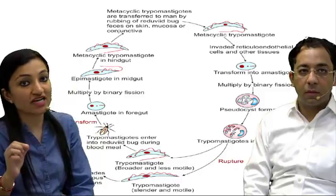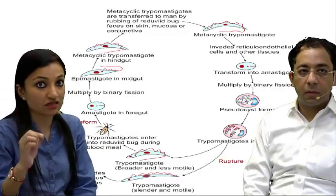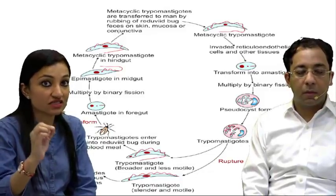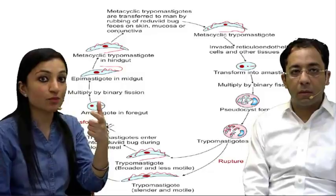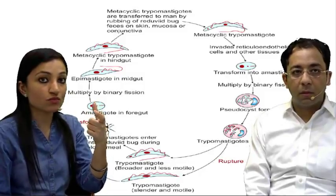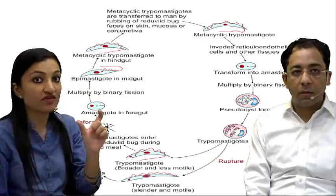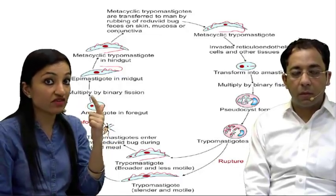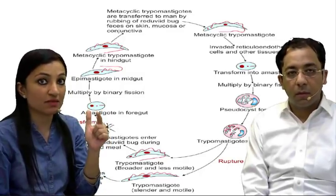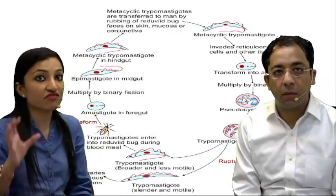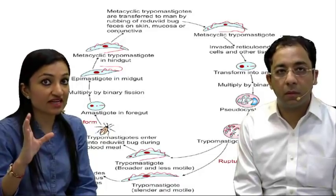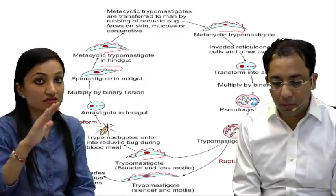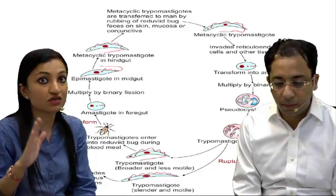When a vector bites a human carrying trypomastigotes in the bloodstream, it picks up those forms. In the vector's foregut, they transform into amastigotes, multiply by binary fission, then change into epimastigote forms in the midgut. Finally, in the hindgut, metacyclic trypomastigote forms are formed, which are infective for humans — completing the life cycle of this parasite.